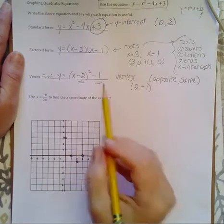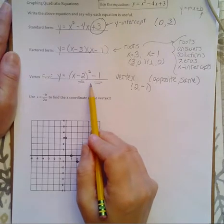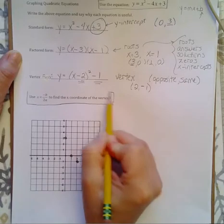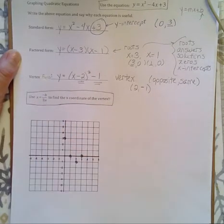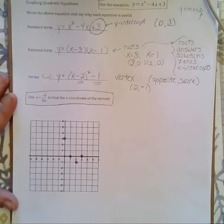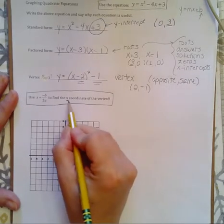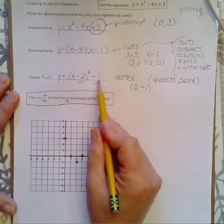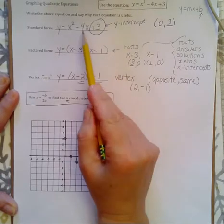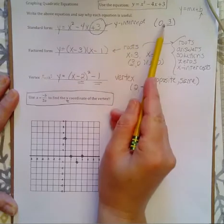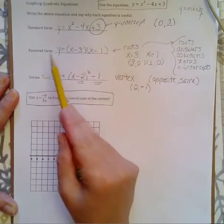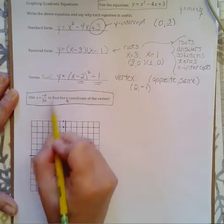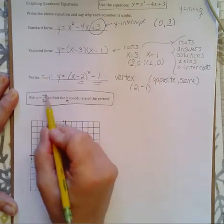But if I cannot find the vertex form, and if it's not given to me, this is what I'm going to use. This simple little equation here, x equals negative b over 2a, gives you the x-coordinate of your vertex. If we were not given this form, and if we started with the standard form, found the y-intercept, factored, found the x-intercepts, and then we wanted to find the vertex, I would use this formula.